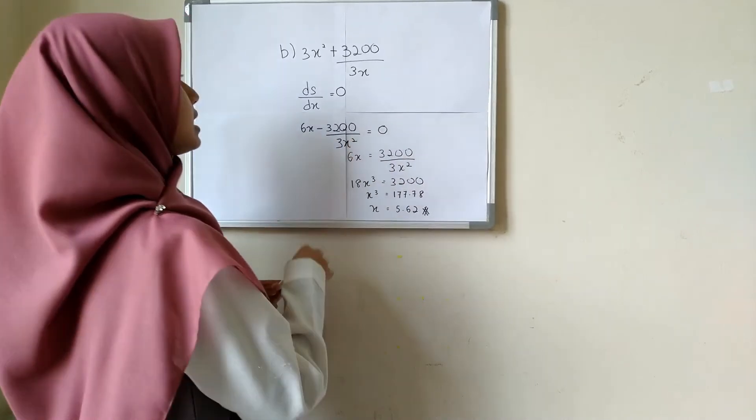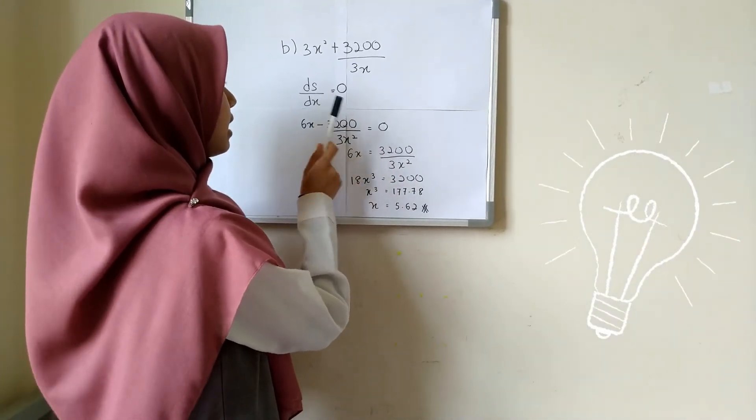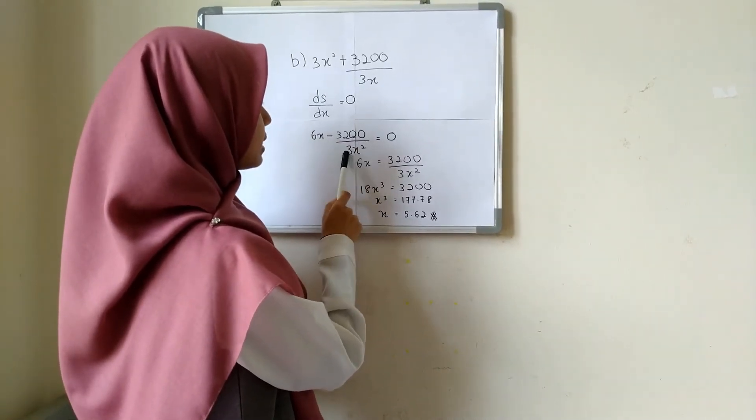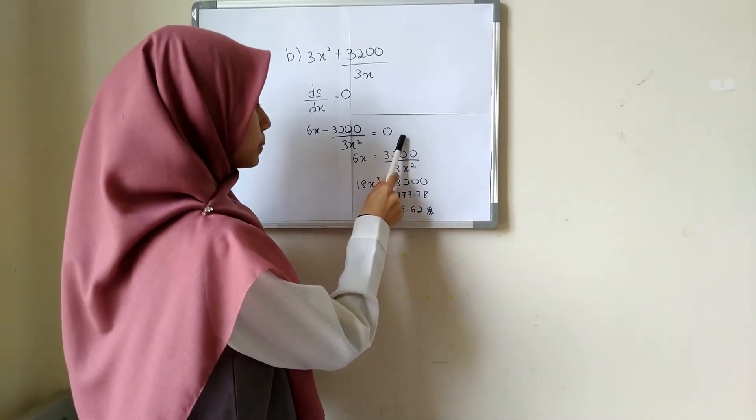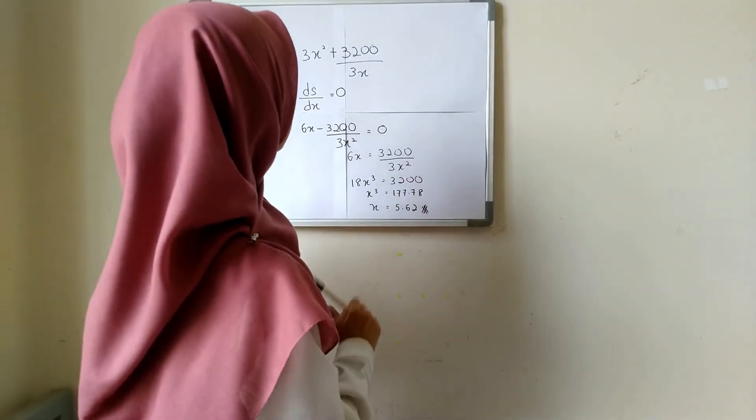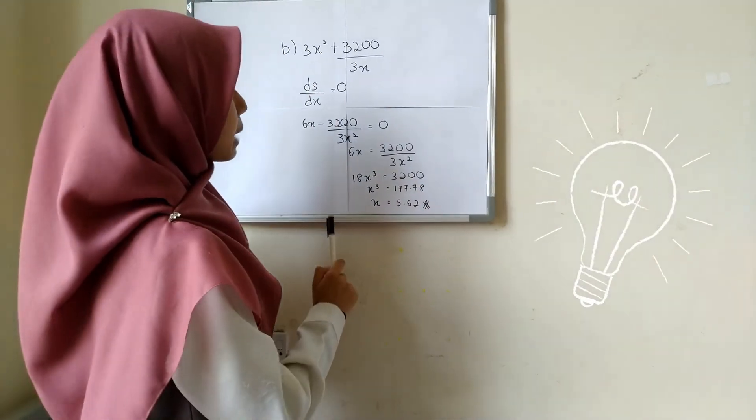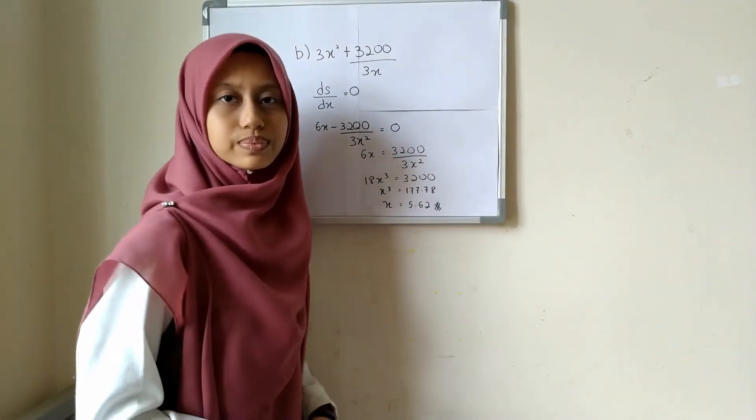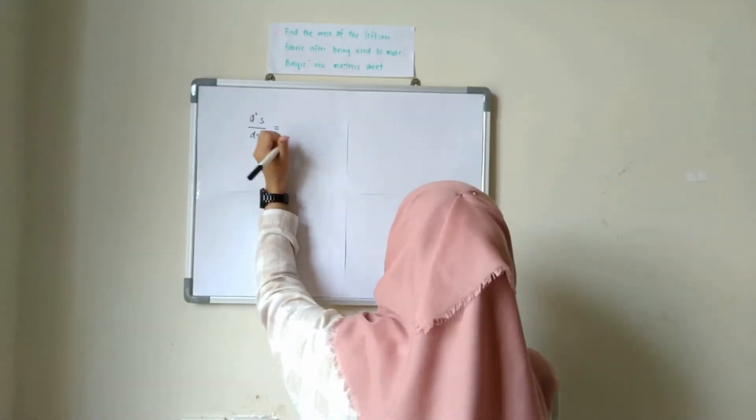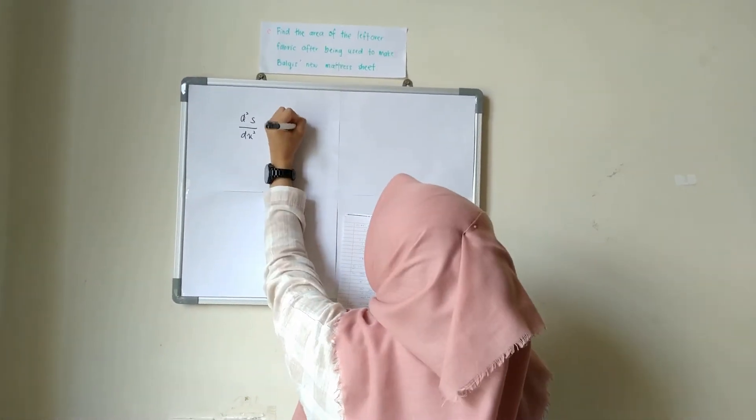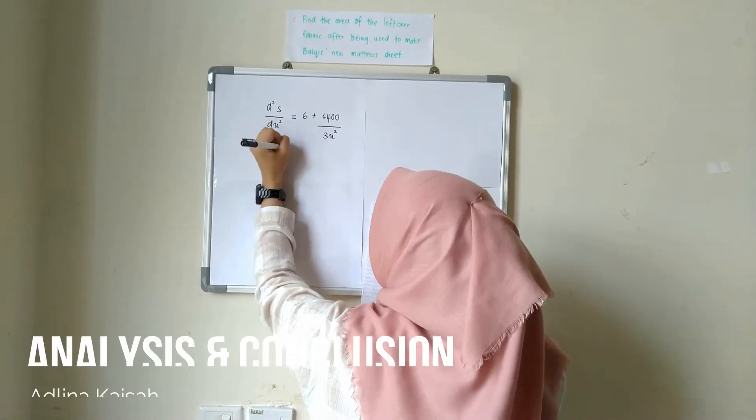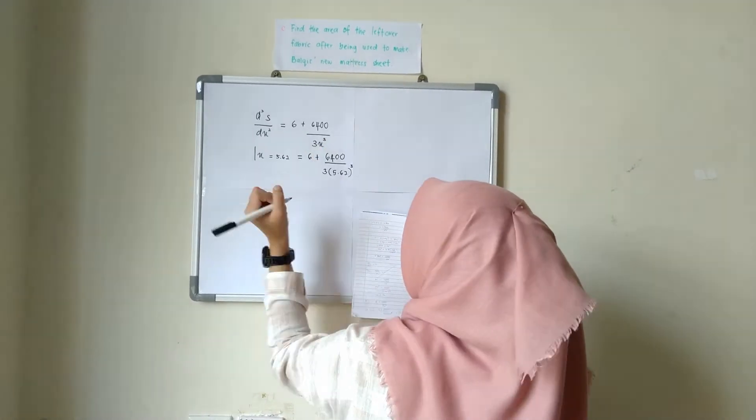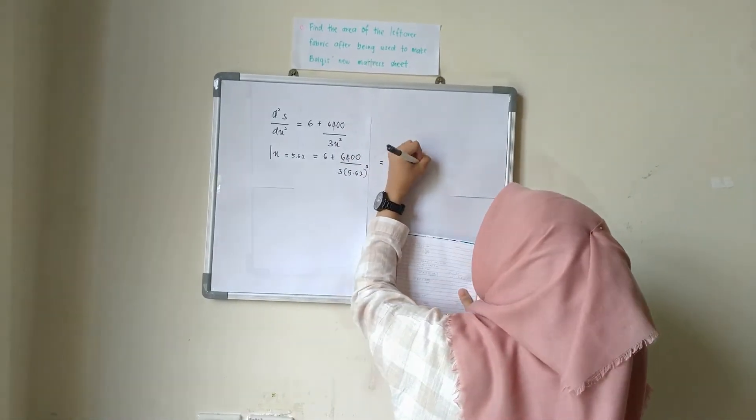For this question, differentiate s with respect to x and we will get 6x minus 3200 divided by 3x squared equal to 0. From this equation, we can get the value of x that minimizes the total surface area of mattress is 5.62.